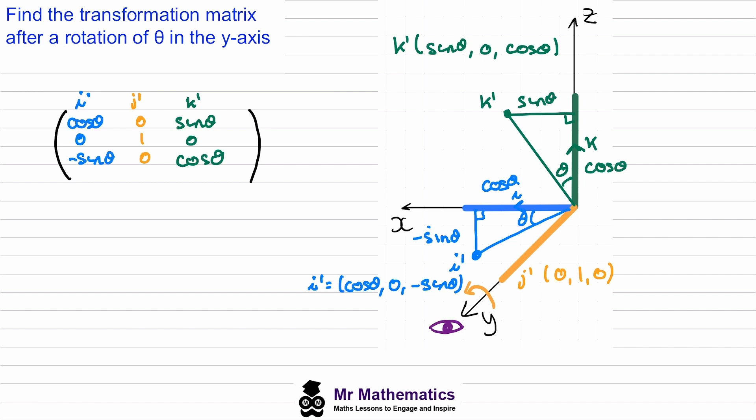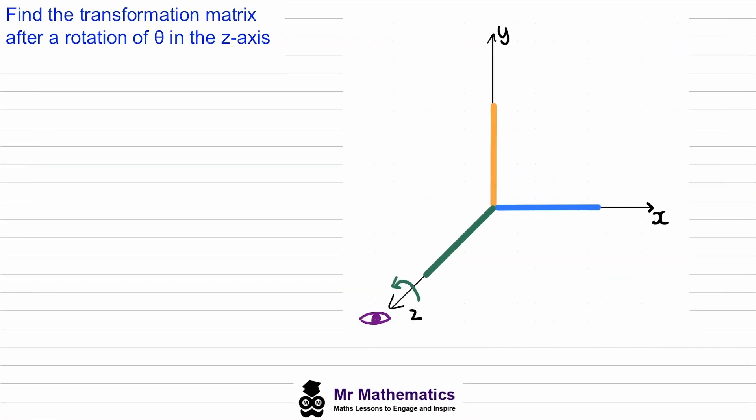In our last example we're going to rotate about the z-axis. You may want to find the transformation matrix for this yourself — you can pause the video and when you come back we'll go through the worked solution. Because we're rotating about the z-axis, the k vector is transformed onto itself, giving an image of k with coordinates (0, 0, 1).